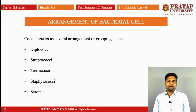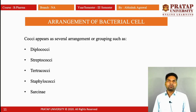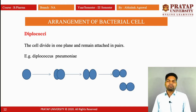The fourth topic is the arrangement of the bacterial cell. Cocci appear in several arrangements or groupings, such as diplococci, streptococci, tetracocci, staphylococci, and sarcinae.